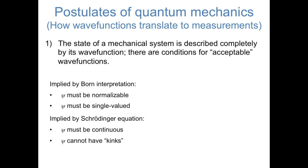In other words, we have to be able to integrate this probability to one over all space. Also, the wave function has to be single-valued. Because the Schrödinger equation has a second derivative in it, and we have to be able to take the second derivative of any wave function, we can infer that the wave function and its first derivative both have to be continuous. In other words, the wave function has to be continuous and smooth.